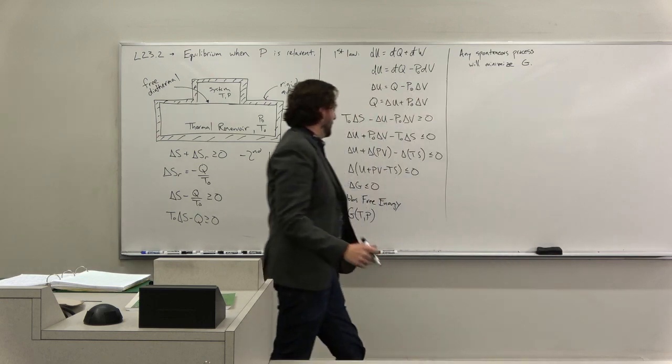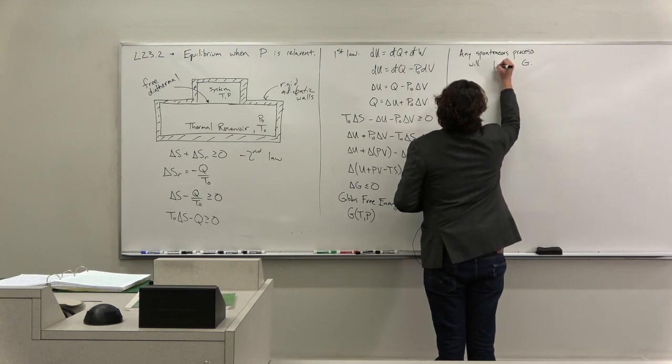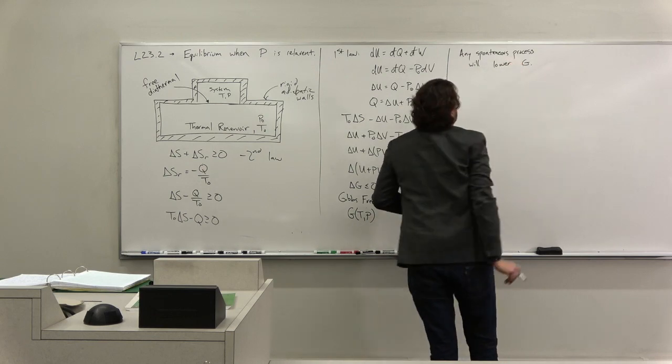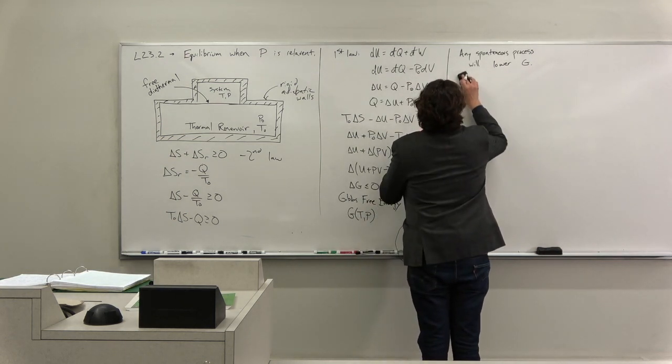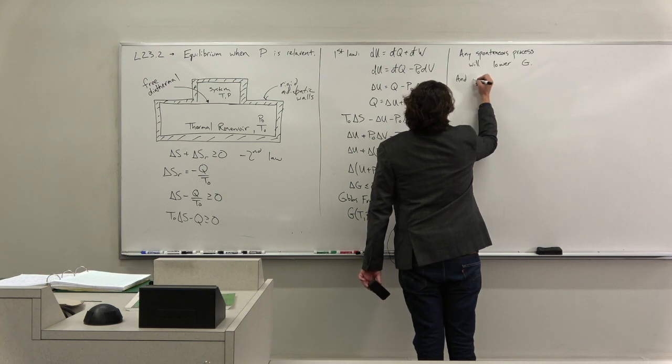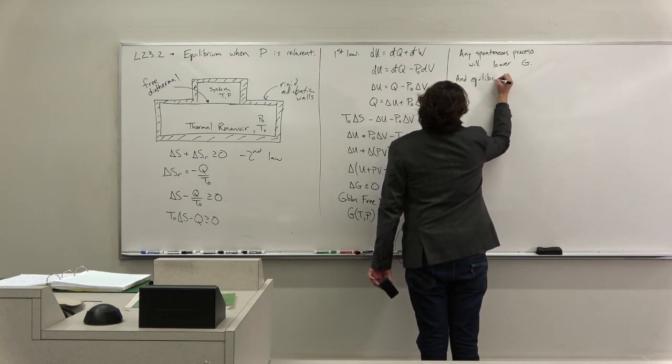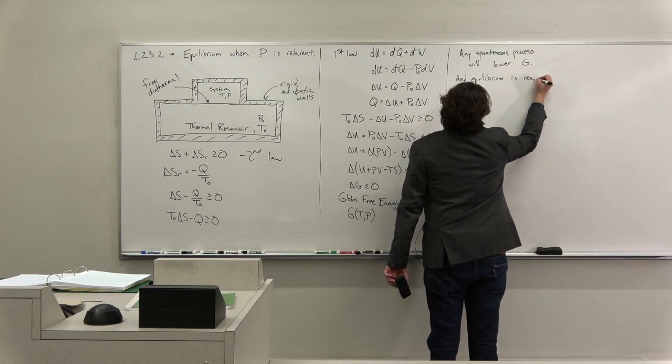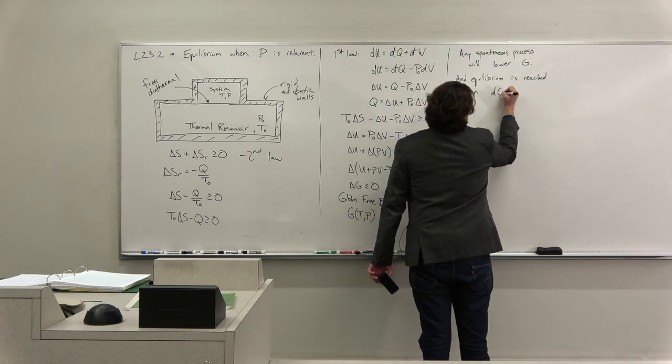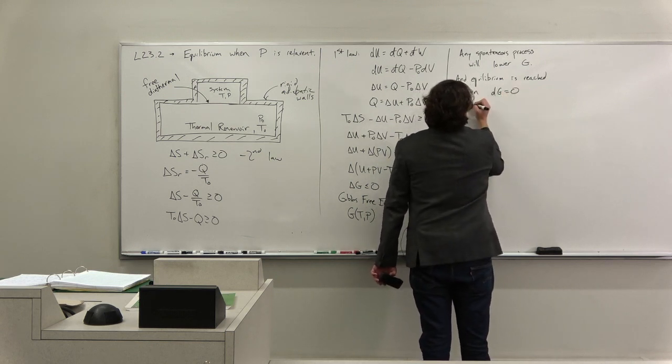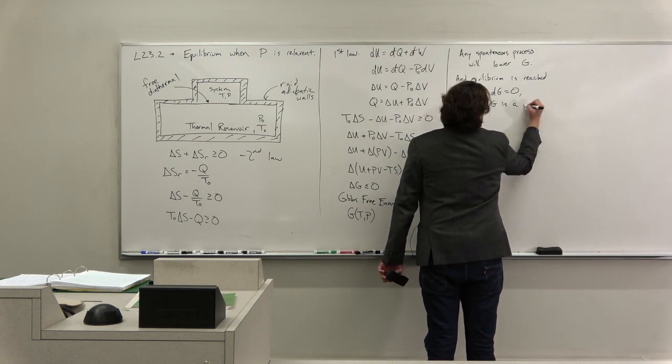That means no added work will minimize G. We're going to lower G. And equilibrium will occur, is reached when dG equals zero. That is when G is a minimum.